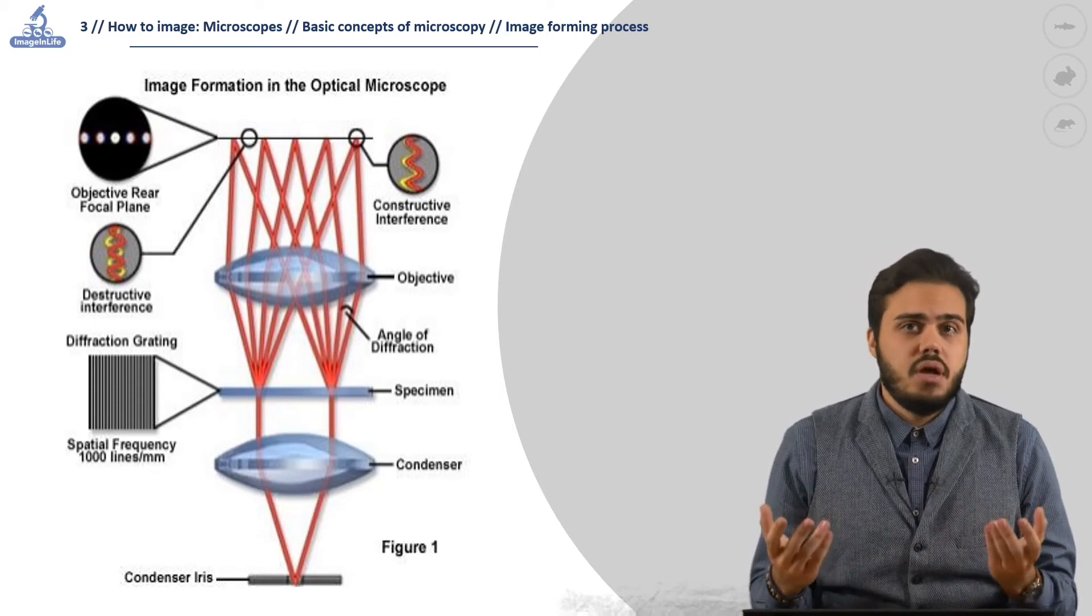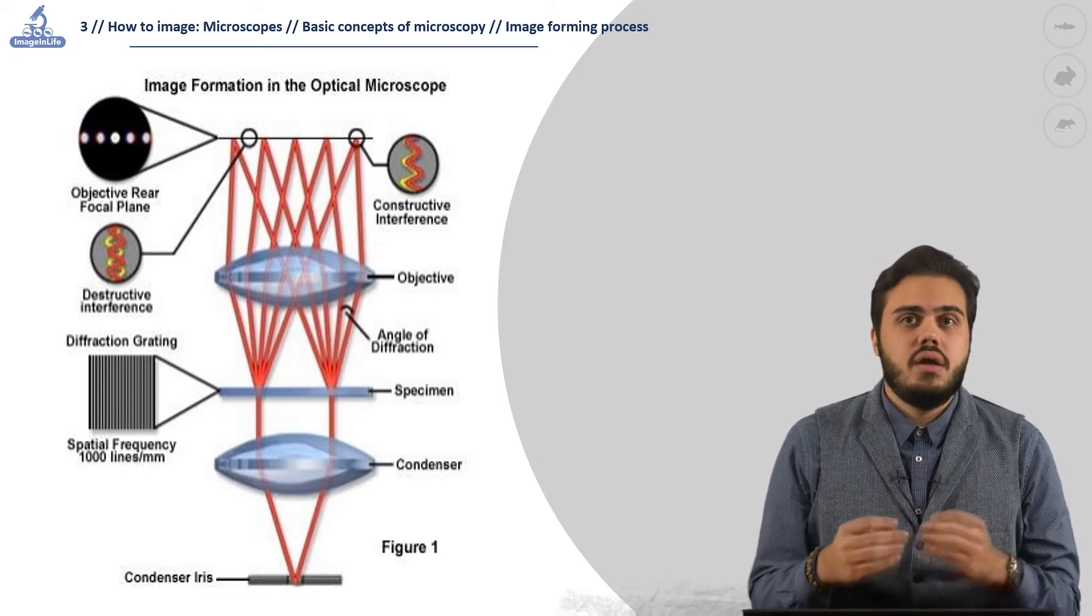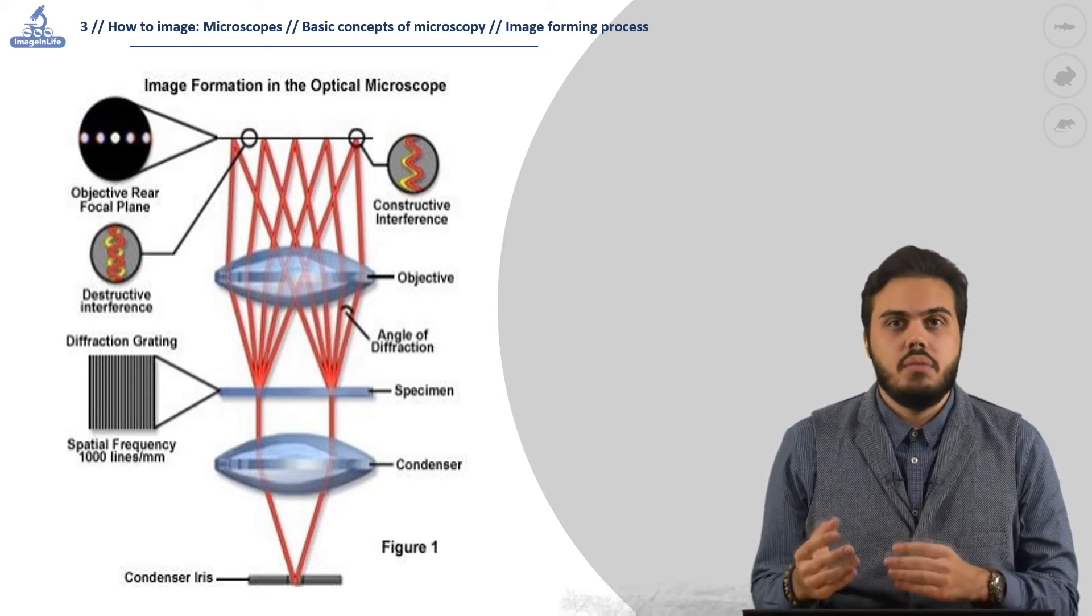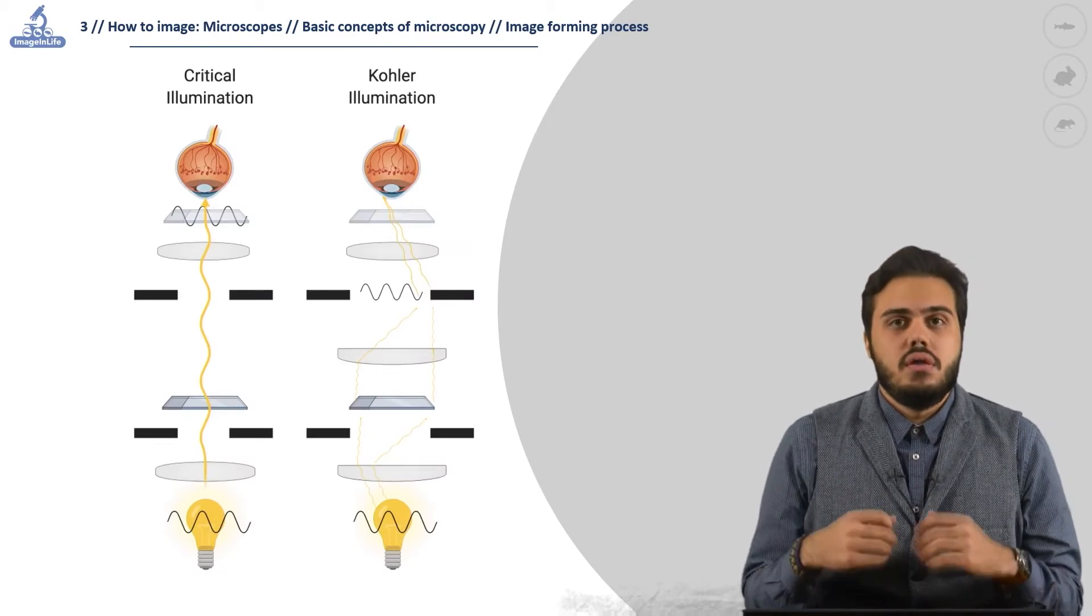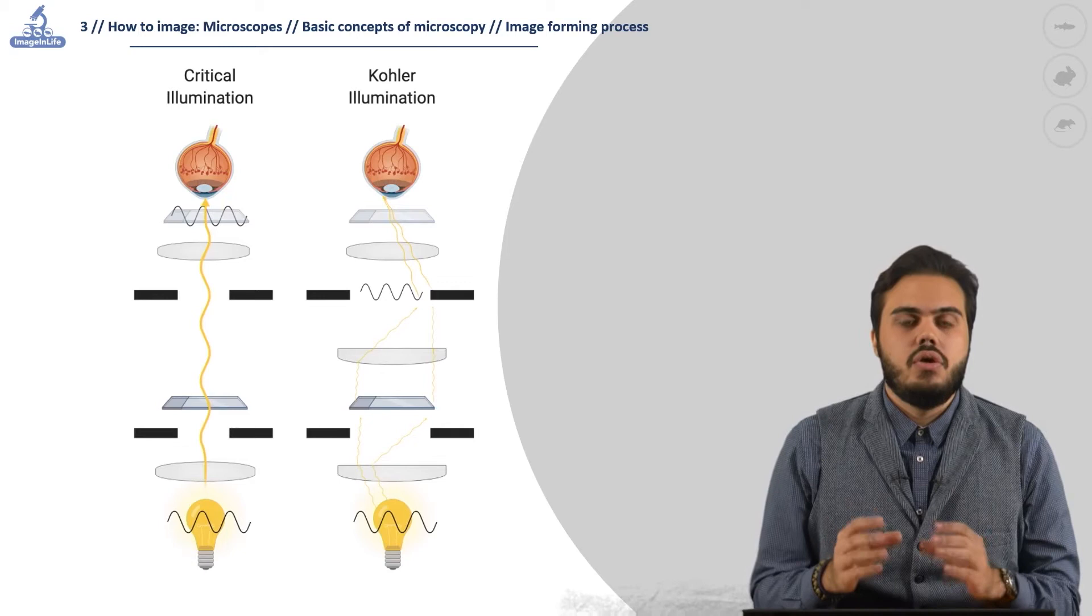The light source can be a lamp, a diode, or a laser, or be replaced by an electron beam for non-optical microscopy. The first step to form an image is to illuminate the specimen we are going to observe.